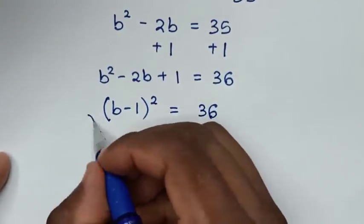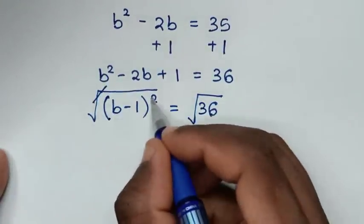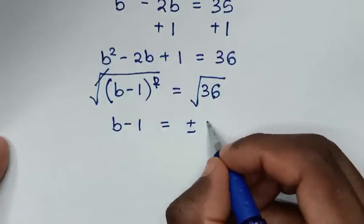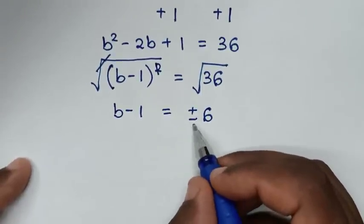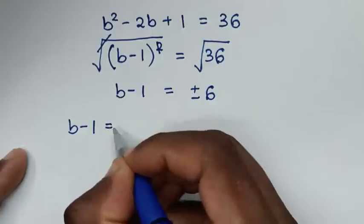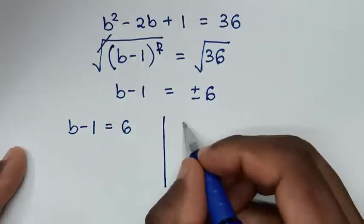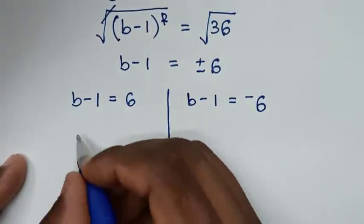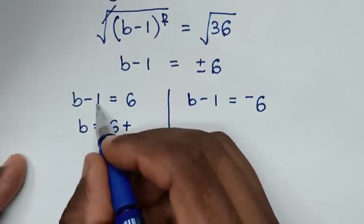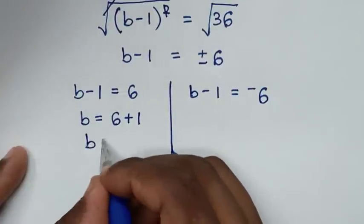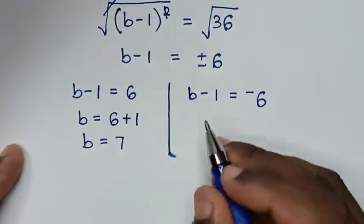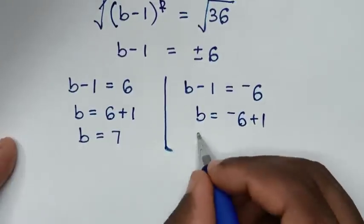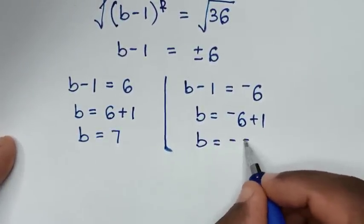Because we have a square, we'll apply the square root to both sides. The square root cancels the square, giving B minus 1 equals plus or minus the square root of 36, which is 6. We have two solutions: B minus 1 equals positive 6 gives B equals 7, and B minus 1 equals negative 6 gives B equals negative 5.